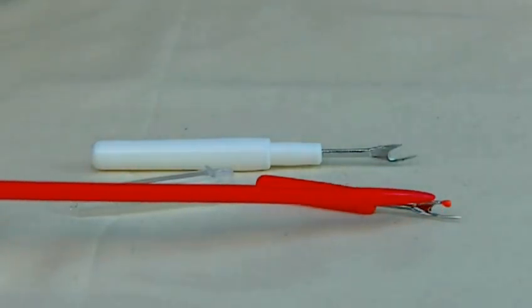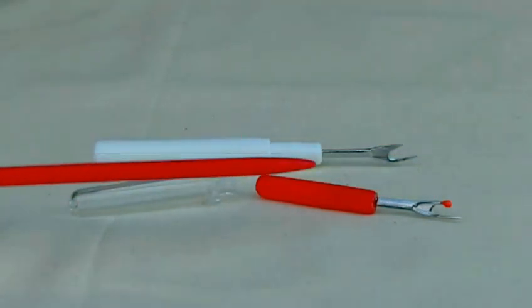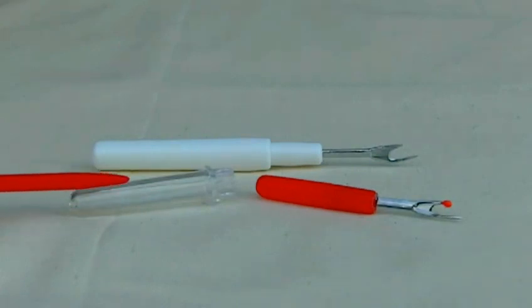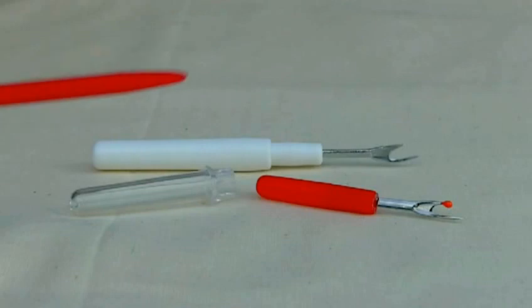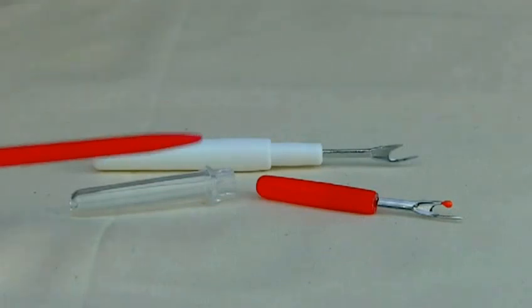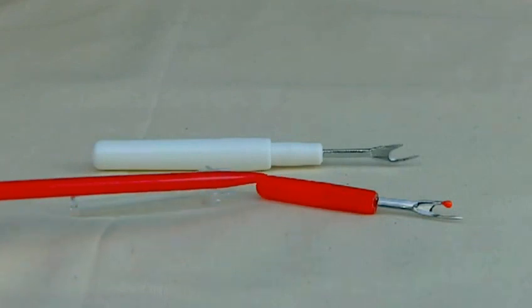As you can see, it's in two sections. This is the lid, and it's for protection to make sure it doesn't injure you while you've got it in your sewing box or wherever. You can also use it as an extension part of the actual handle.